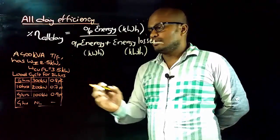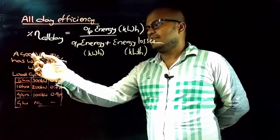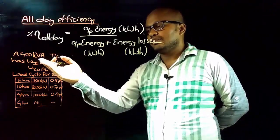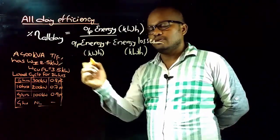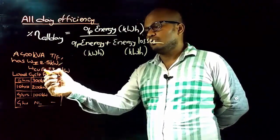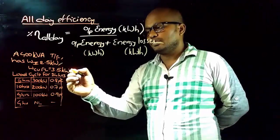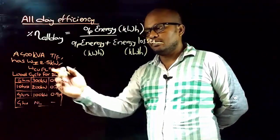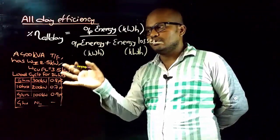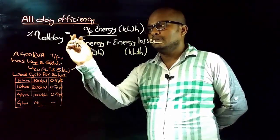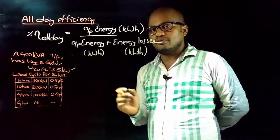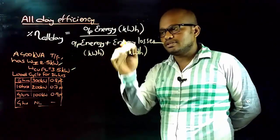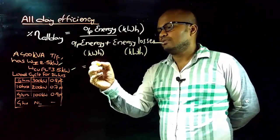A 400 kVA distribution transformer is given with an iron loss of 2.5 kilowatts and a full load copper loss of 3.5 kilowatts. Using the given load cycle for 24 hours, we need to find the percentage all-day efficiency.